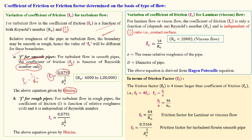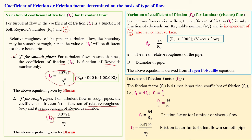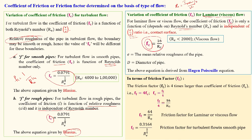For turbulent flow in a rough pipe, the coefficient of friction fc is a function of relative roughness only and is independent of Reynolds number. For laminar or viscous flow, fc depends only on Reynolds number and is independent of relative roughness e/d. In laminar flow, fc = 16 / Re. For turbulent flow in a smooth pipe, fc = constant / Re^(1/4).